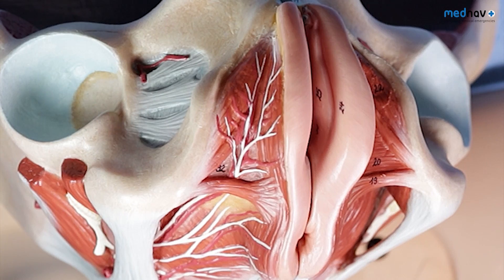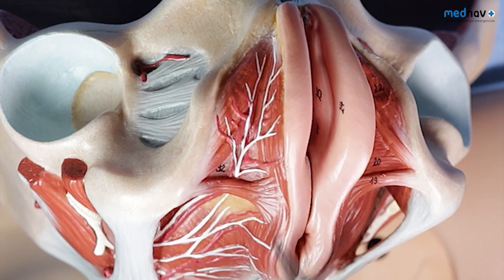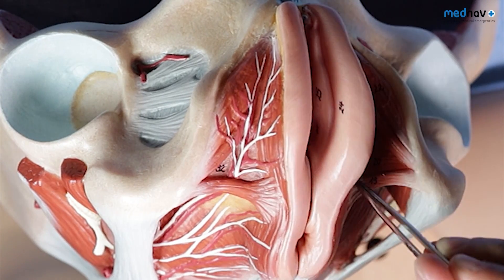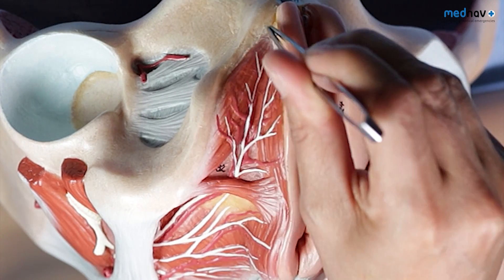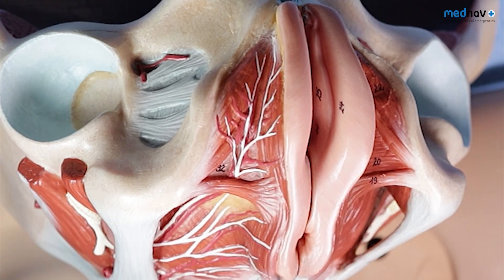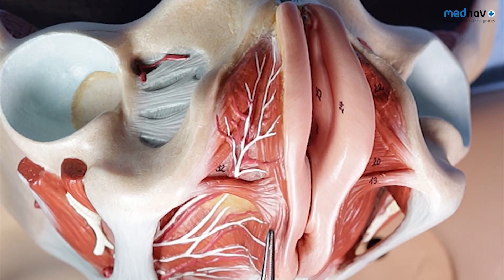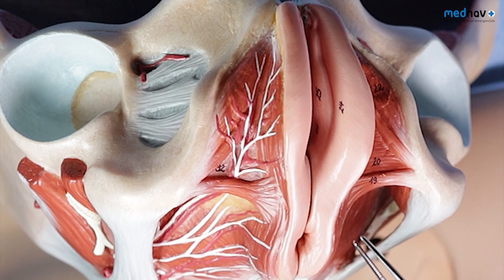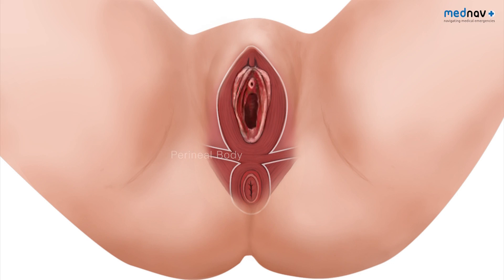The muscles associated with perineal trauma are the bulbospongiosus, which can be thought of as a vaginal sphincter muscle, the transverse perineal muscles, and the external anal sphincter. These three muscles come together to form a central tendon which is called the perineal body.